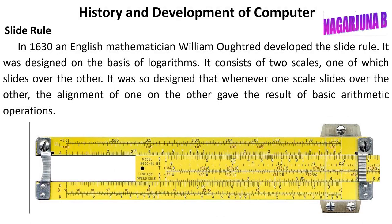In the year 1630, an English mathematician William Oughtred developed the slide rule. It was designed on the basis of logarithm, the same principle as the earlier invention, Napier's Bones. The slide rule consisted of two scales, one of which slides over the other. It was designed so that whenever one scale slides over the other, the alignment of one on the other gave the result of basic arithmetic operations.